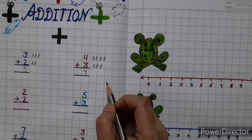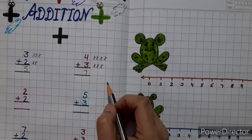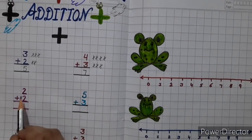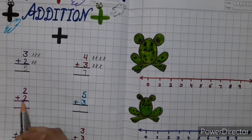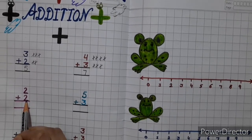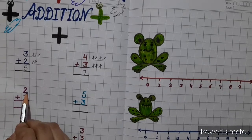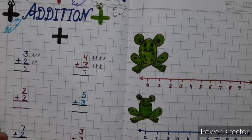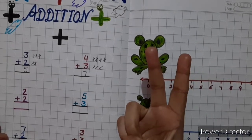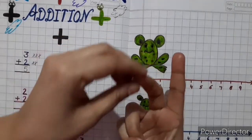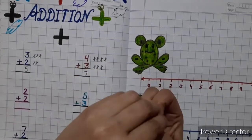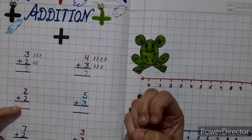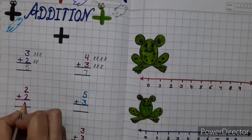So kids, next method is mind and finger method. So here, 2 plus 2. So kids, keep 2 in your mind and 2 fingers up. So count after 2, 3, 4. So answer is 4. So write 4 here.